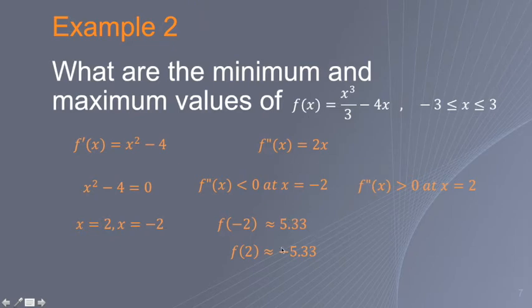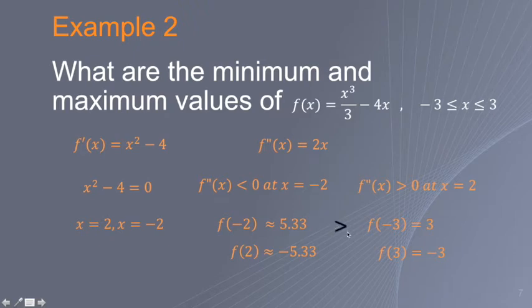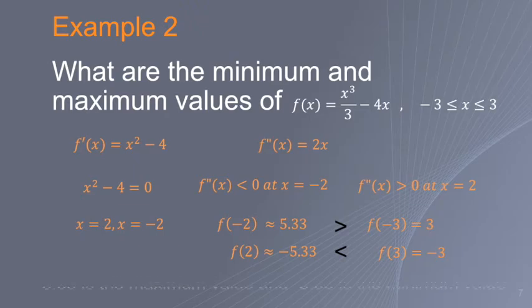Now check the domain endpoints for global extrema. f(−3) = 3 and f(3) = −3. Comparing: f(−2) ≈ 5.33 > f(−3) = 3, so x = −2 gives the global maximum. And f(2) ≈ −5.33 < f(3) = −3, so x = 2 gives the global minimum.